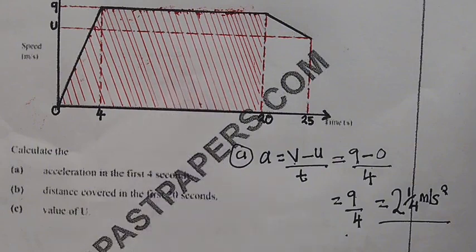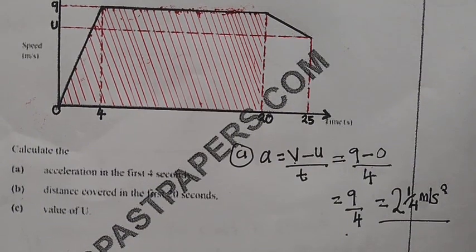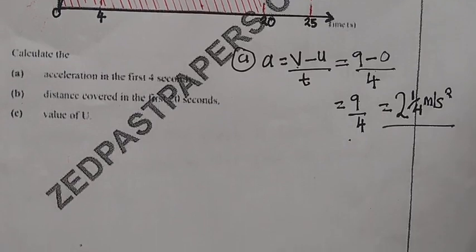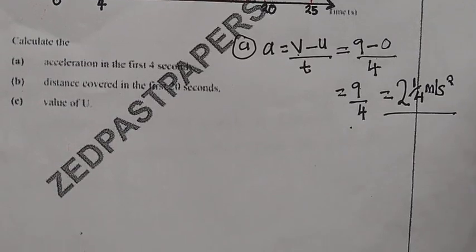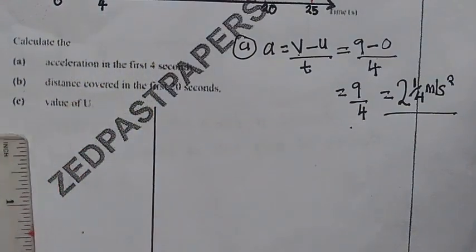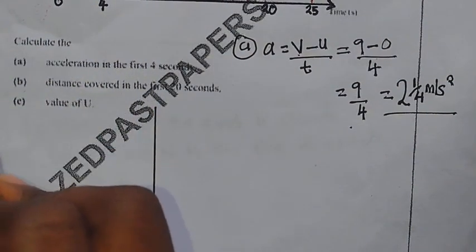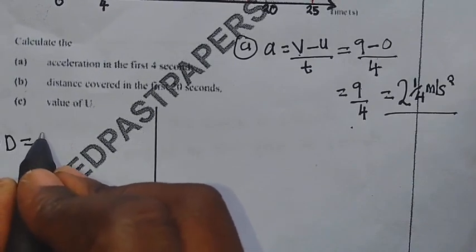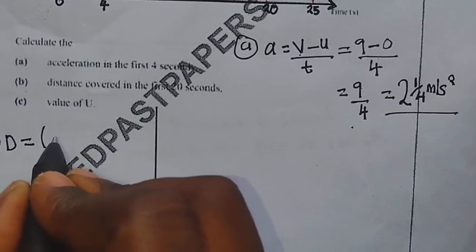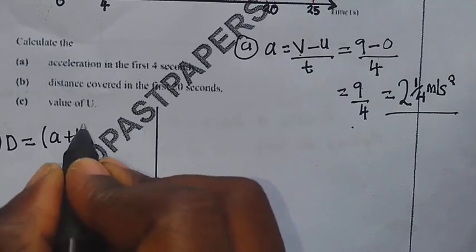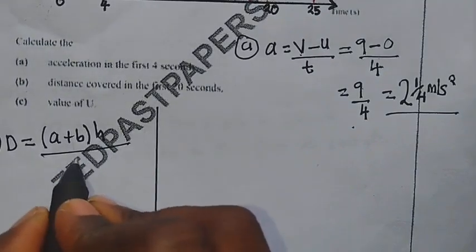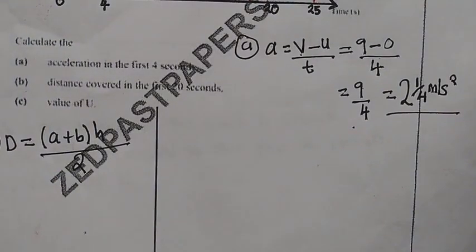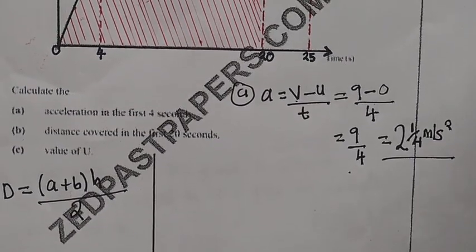We are going to come up with the formula for finding the distance or the area under the trapezium. The formula is: distance equals open bracket A plus B close bracket times H divided by 2. Now let us identify the letters that we have — we have A, B, and also the height. Let us go back to our diagram.